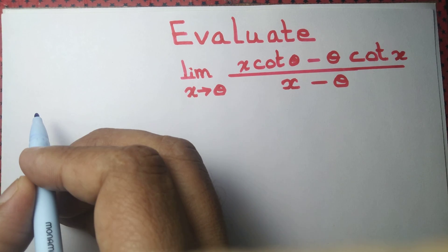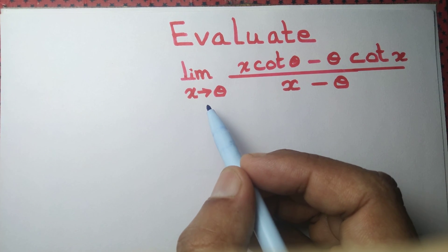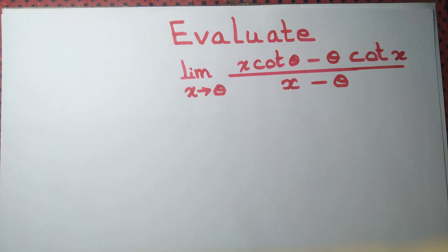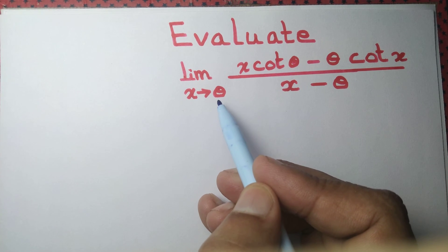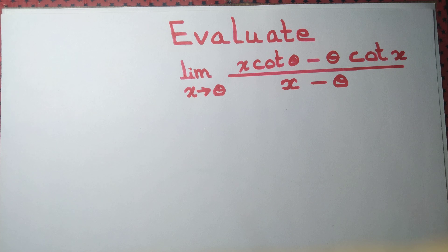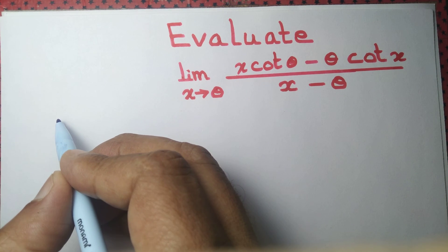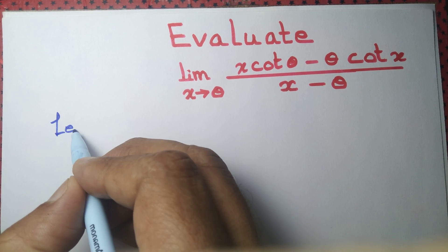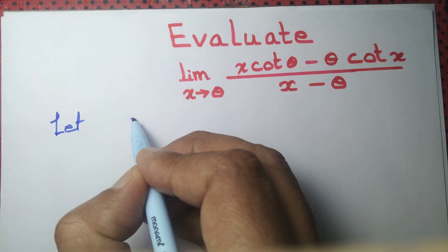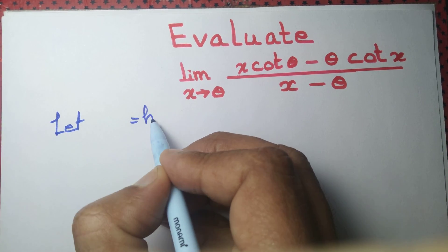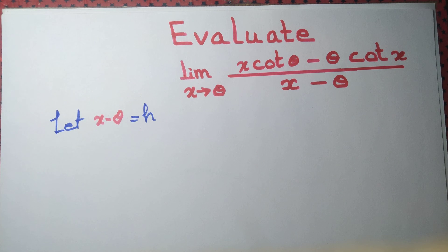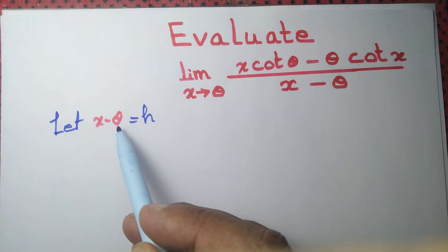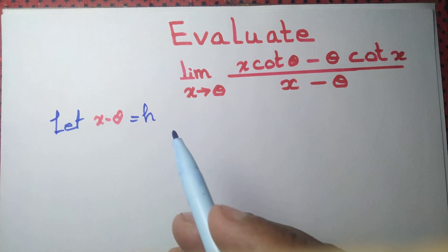We know that most limit formulas we have are in the form h tends to 0. Here, we have x tends to theta. How can we get h tends to 0? Well, let's take x minus theta equal to h. Then observe that if x tends to theta, h tends to 0.